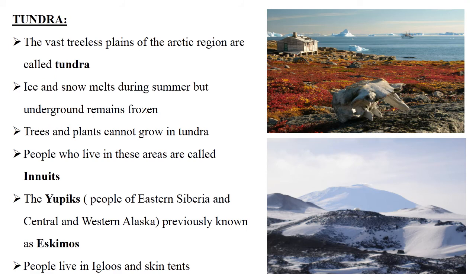Tundra. Vast treeless plains of the Arctic region are called tundra. There is little vegetation — mostly lichen and flowering herbs during the summer when the temperature is warm. Although the ice and snow melt during the summer months, the underground remains frozen. This is why trees and plants cannot grow in tundra.